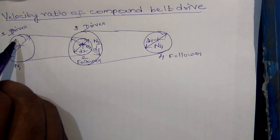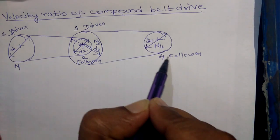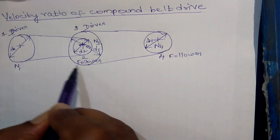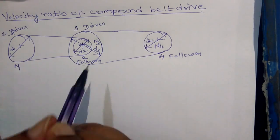Here power is transmitted from pulley 1 to pulley 4 through pulleys 2 and 3. So it is called the compound belt drive.